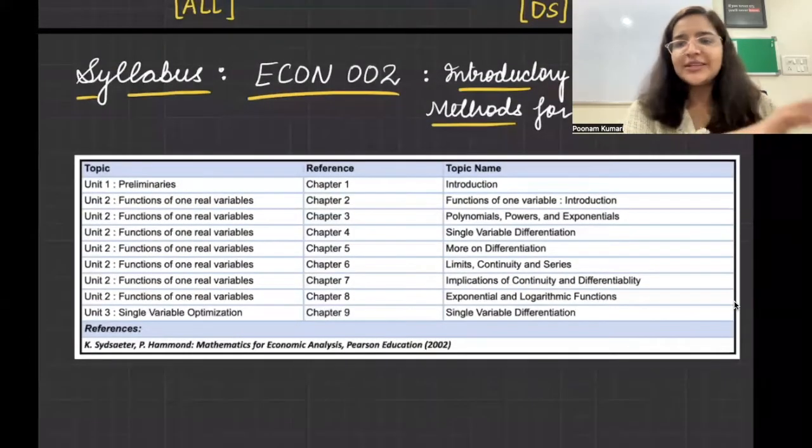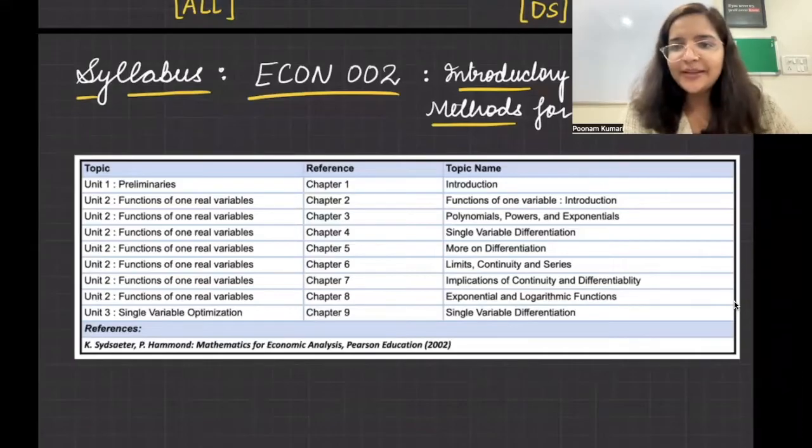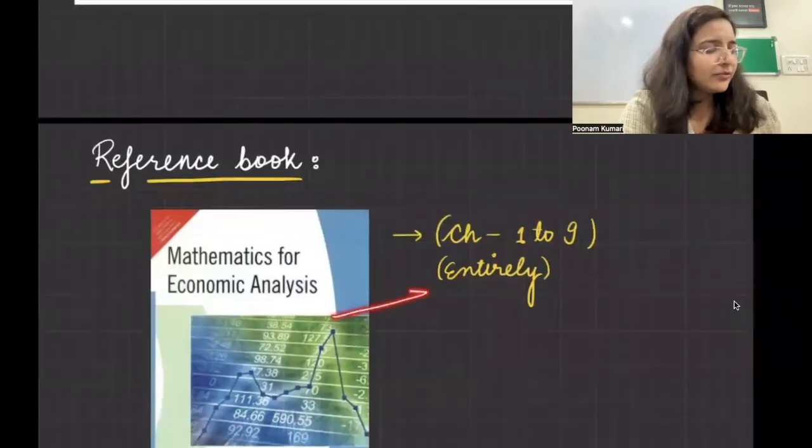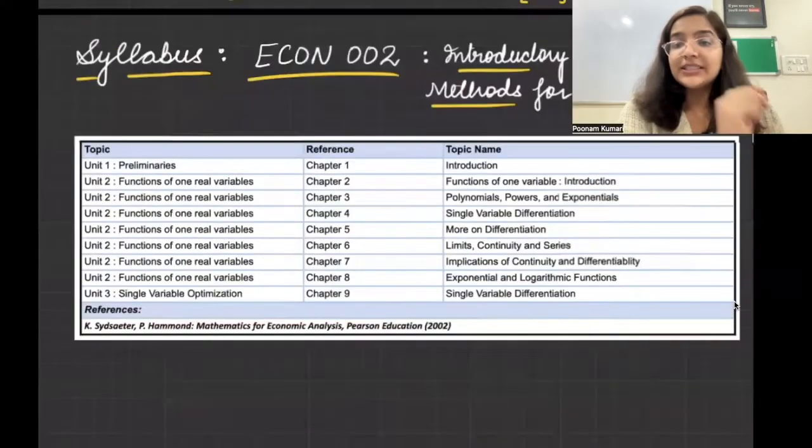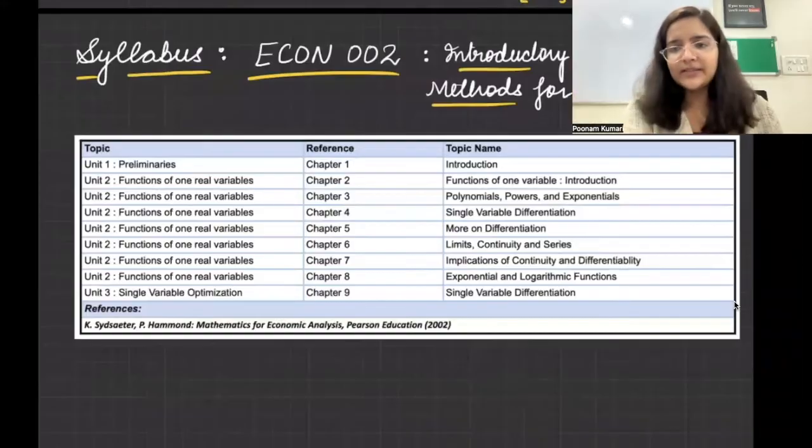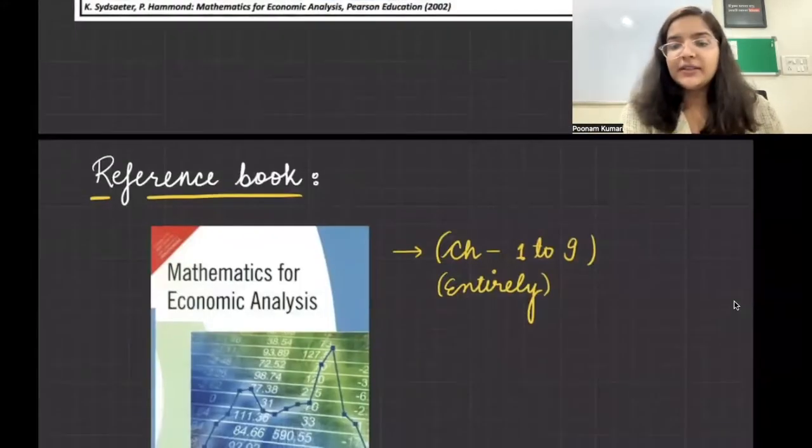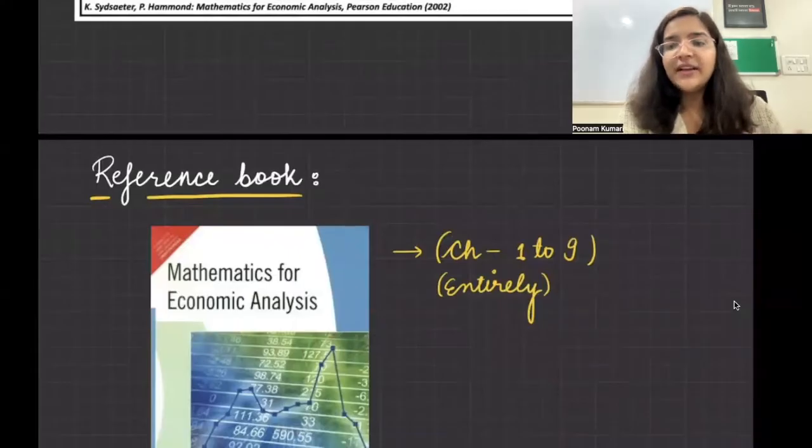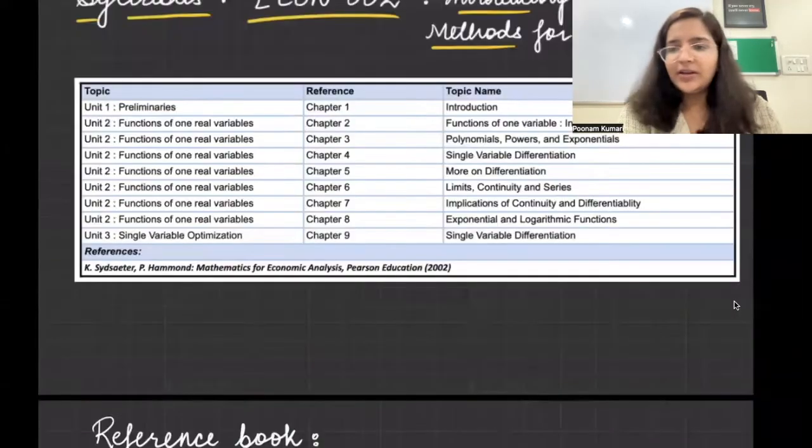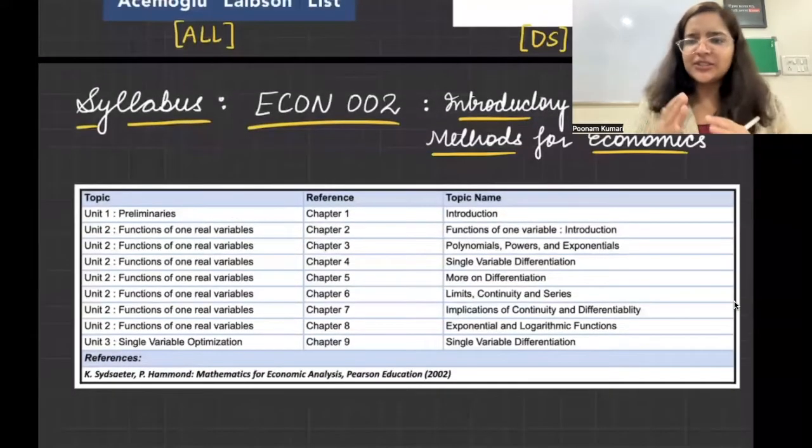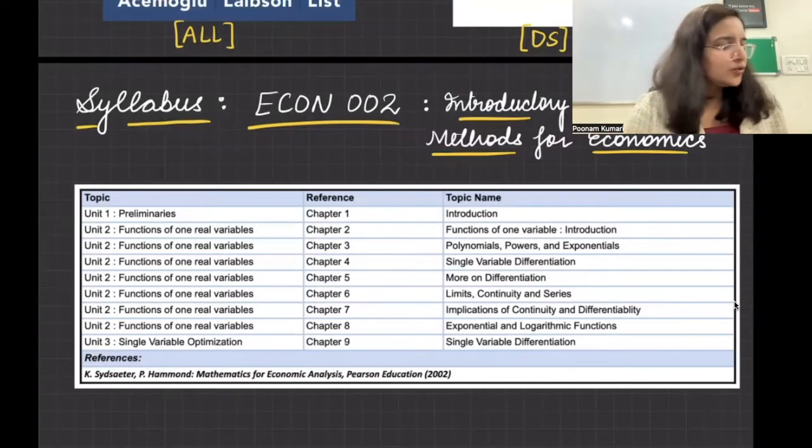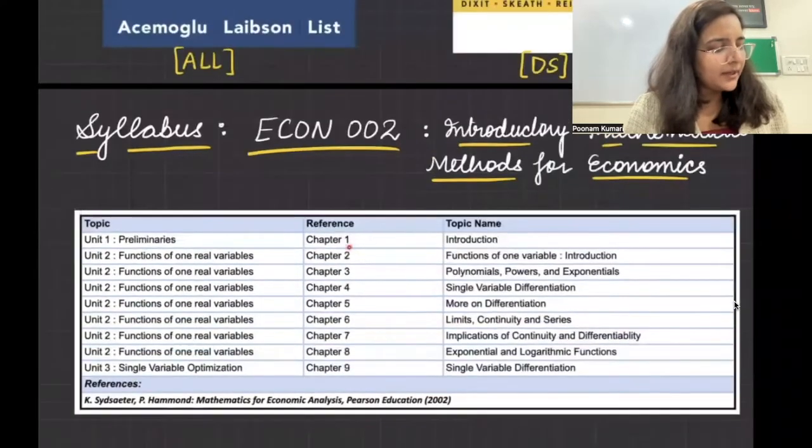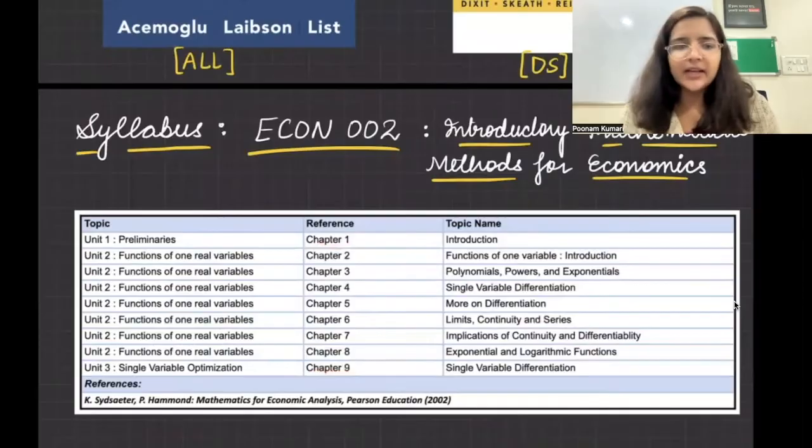So what is going to be our syllabus? The exact syllabus is very simple, not many complications. So from this particular book, you have to start doing chapter number one to nine in its entirety. Matlab poore ke poore chapter, there's nothing that you have to skip. Only if some portion is written optional, even in the book, that you might skip. But rest of it from chapter number one to nine, you have to do everything entirely. It's not very difficult. There is not going to be much complications here. So we have to do chapter number one to chapter number nine.